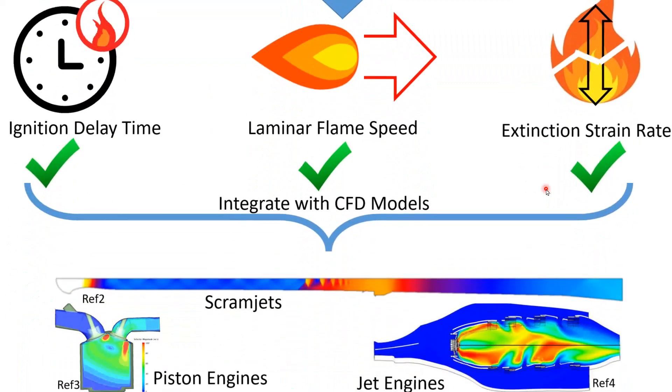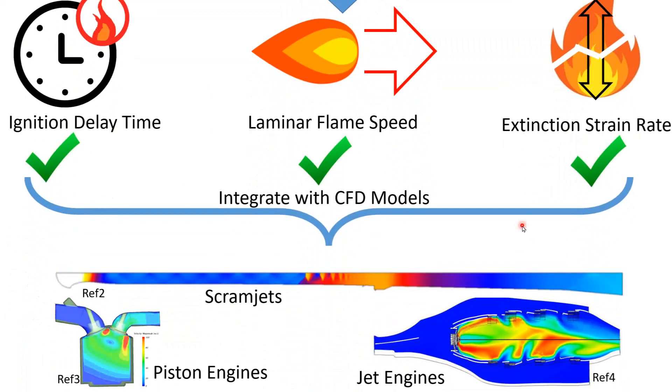If the mechanism is able to correctly predict all three of these, then we plug it into a CFD code and then use the CFD code to predict more complicated but practical systems such as scramjets, piston engines, jet engines, and so forth.